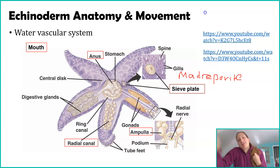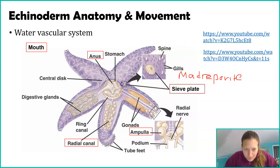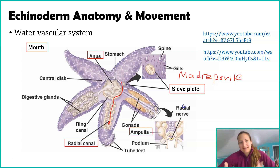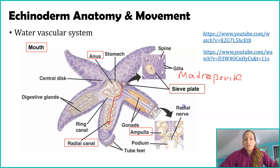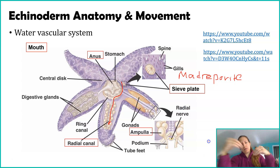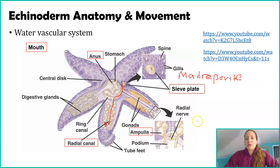After passing through the sieve plate, the water travels through something called the radial canal. In the case of a sea star, there's one radial canal going down every leg. Sea stars with 20 legs have 20 radial canals. So water comes in through the sieve plate and goes toward each of these radial canals.